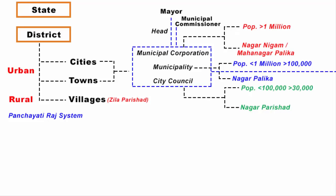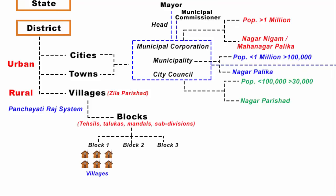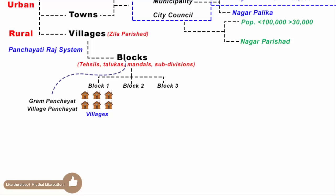For rural administration purposes, a district or Zilla Parishad is subdivided into blocks. Blocks are also called tehsils, talukas, mandals, or subdivisions — different states have different names. Under a single block there are several villages. Villages are often the lowest level of subdivisions in India. The governmental bodies at the village level are called Gram Panchayat, and block level government is the link between the Gram Panchayat and the district administration.